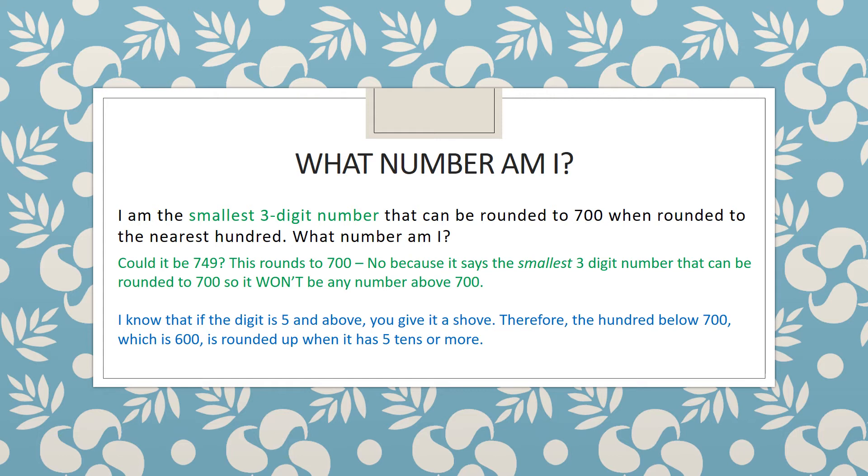I know that if the digit is five and above you give it a shove that means it's been rounded up. Therefore the 100 below 700 which is 600 is rounded up when it has five tens or more. Let's have a look at what this looks like.